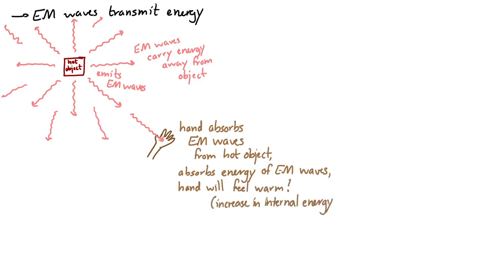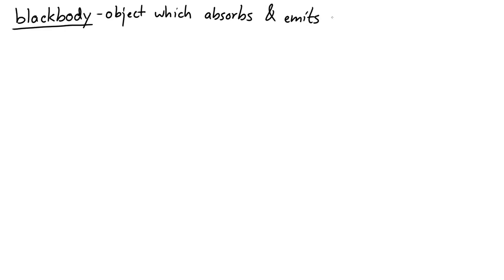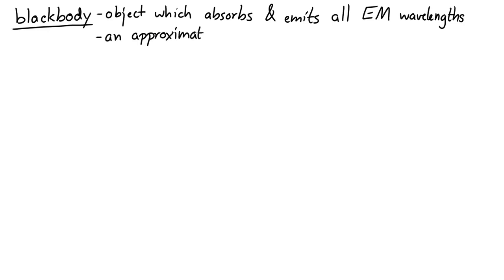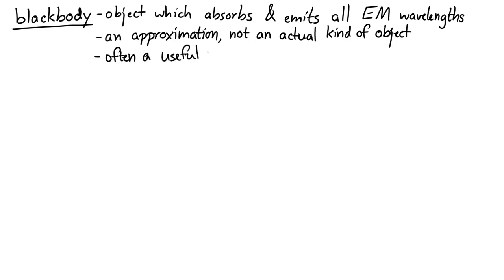We're going to start talking about things called black bodies. A black body is an object which absorbs and emits all wavelengths. A black body is not an actual object — this is an approximation, but it is a useful approximation that we're going to use pretty often.